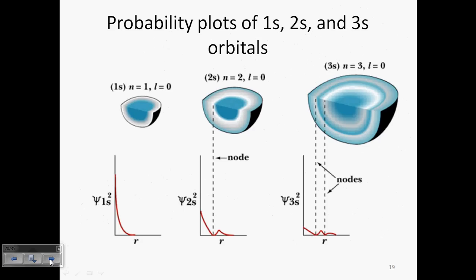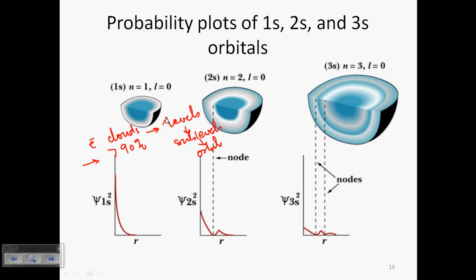This is a pictorial representation of the S orbital: 1s is smaller, 2s is bigger, and 3s is even bigger. There are nodes and dead regions inside where the probability of finding an electron is very low. In the quantum mechanical model, Schrödinger talks about the electron cloud — all the orbitals of an atom put together form the electron cloud. Within the electron cloud, the probability of finding an electron at any point in time is greater than 90%. It's like bees buzzing around a beehive — electrons constantly move around the nucleus in this cloud.